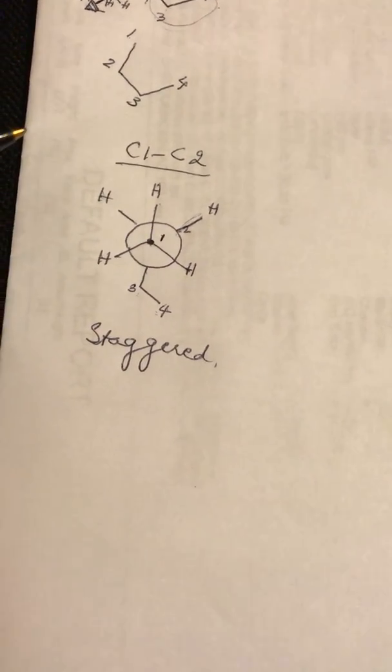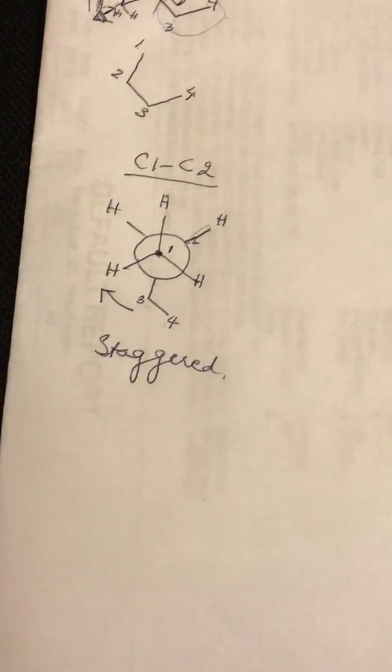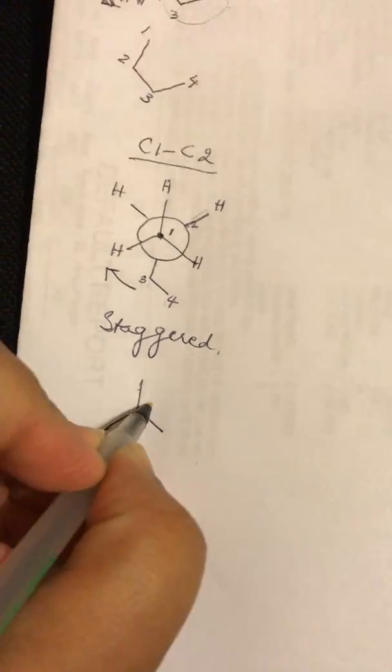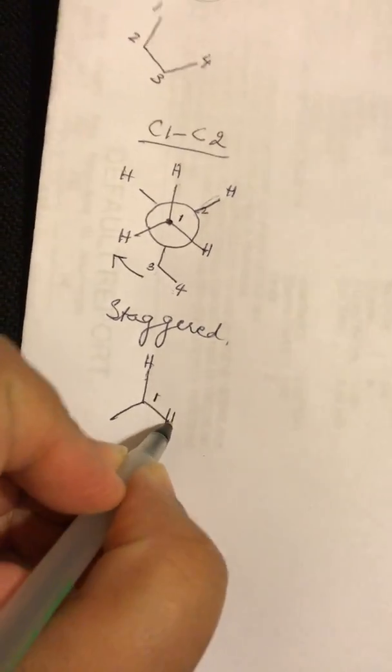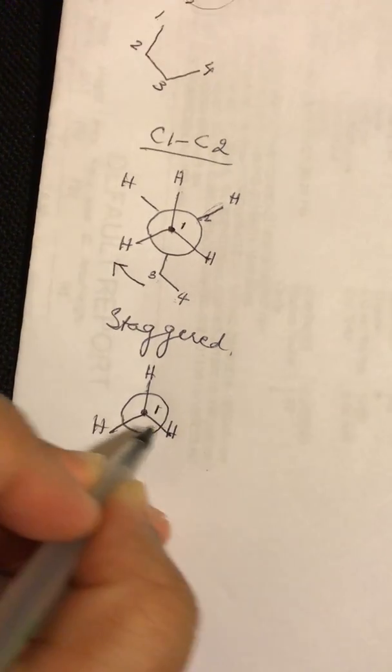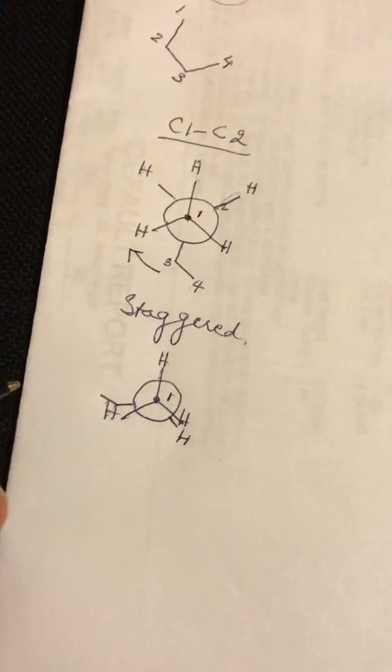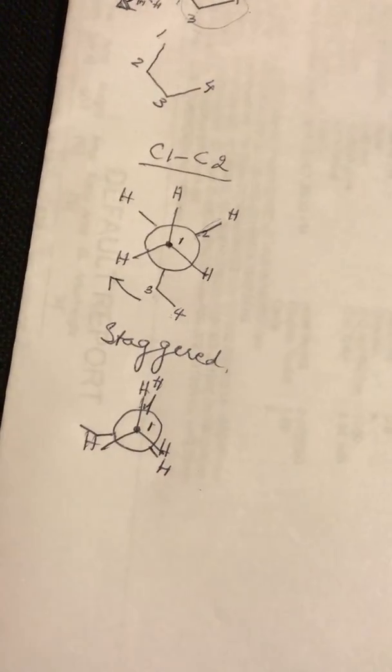If you wanted to look at the eclipsed conformation, all you've got to do is give it a rotation by 60 degrees. So you would see the front carbon, which will have the three hydrogens, and on the back you would have a hydrogen, an ethyl, and another hydrogen.